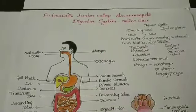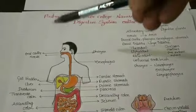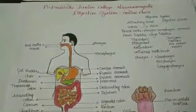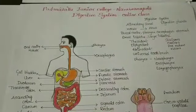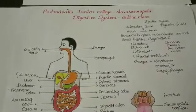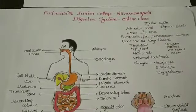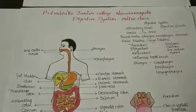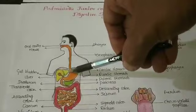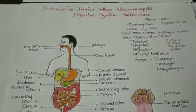The Alimentary Canal begins with the mouth and ends with the anus. Parts of the Alimentary Canal between the mouth and anus include the Buccal Cavity, Pharynx, Esophagus, Stomach, Small Intestine, and Large Intestine.